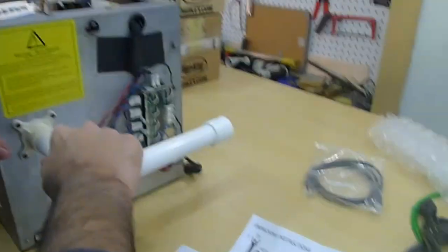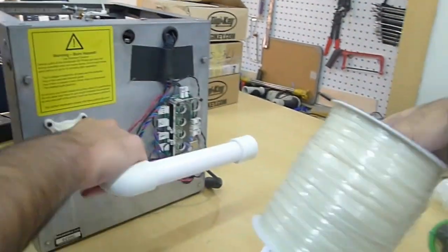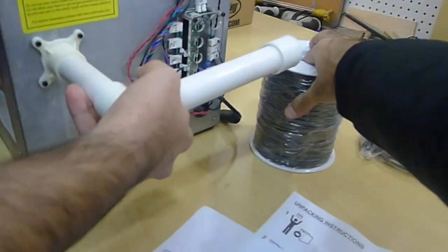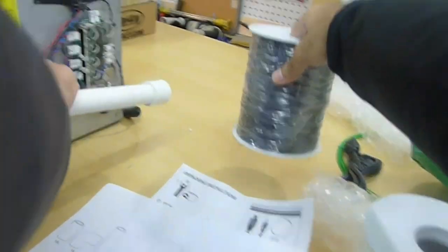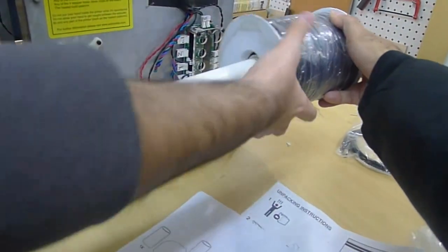We also received - we ordered two separate filament, one kg filament spools, natural ABS and black ABS. And the filament spool mounts like this.